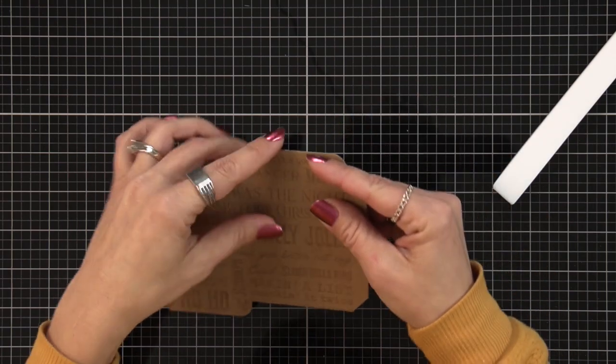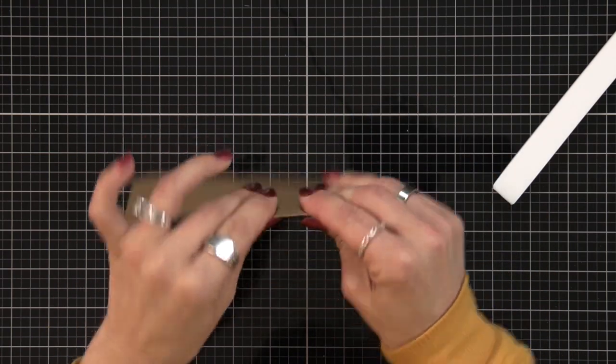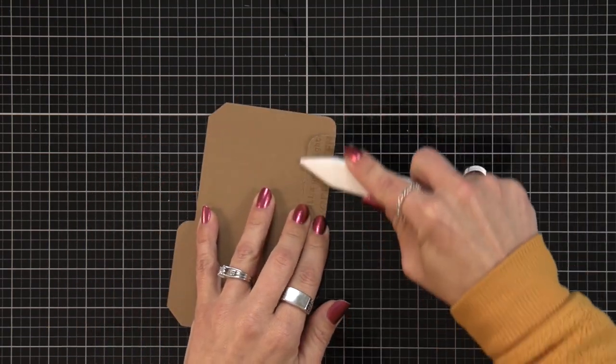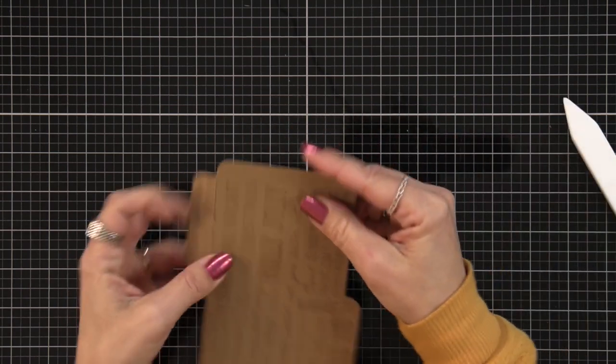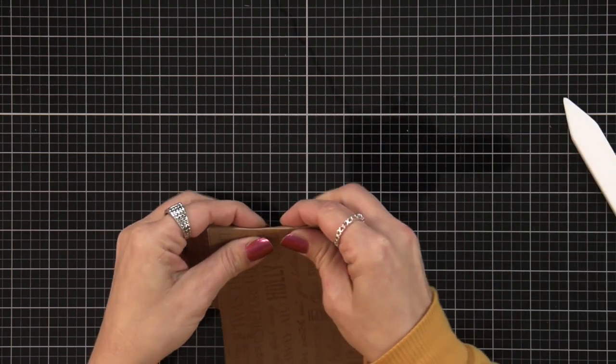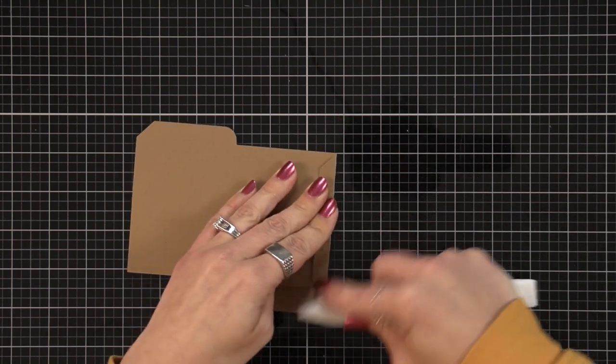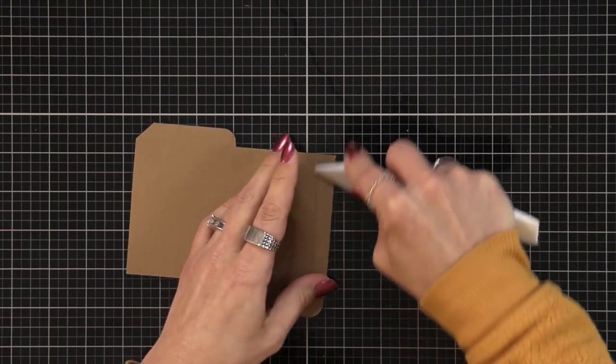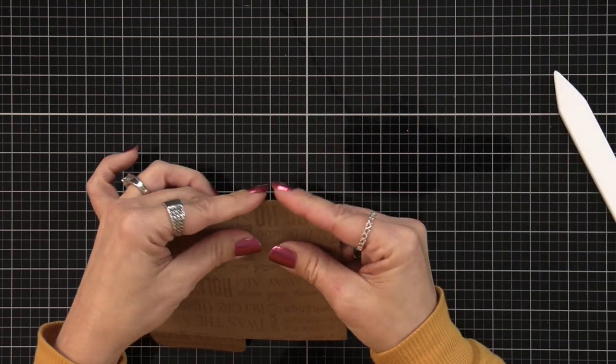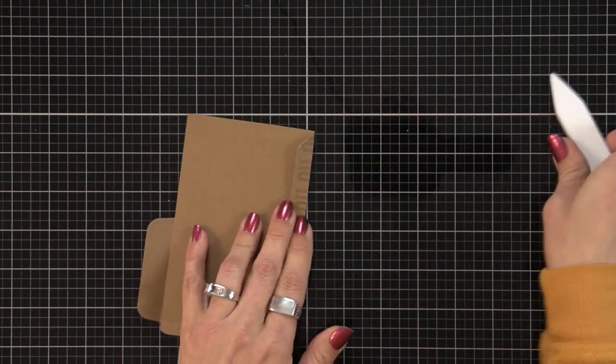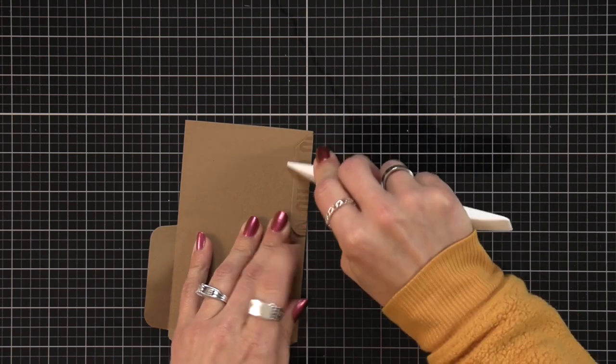This die also created some score lines so I am going to go through and fold on all of those score lines and reinforce the fold with a bone folder. Now this is some pretty thick cardstock and I do actually have some cracking on the edge. It didn't rip everything is still held together and I actually like the cracking it kind of added to that rustic feel.